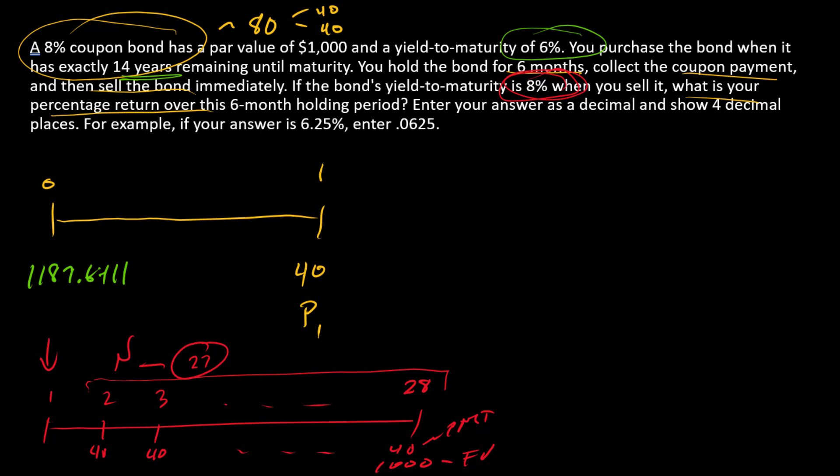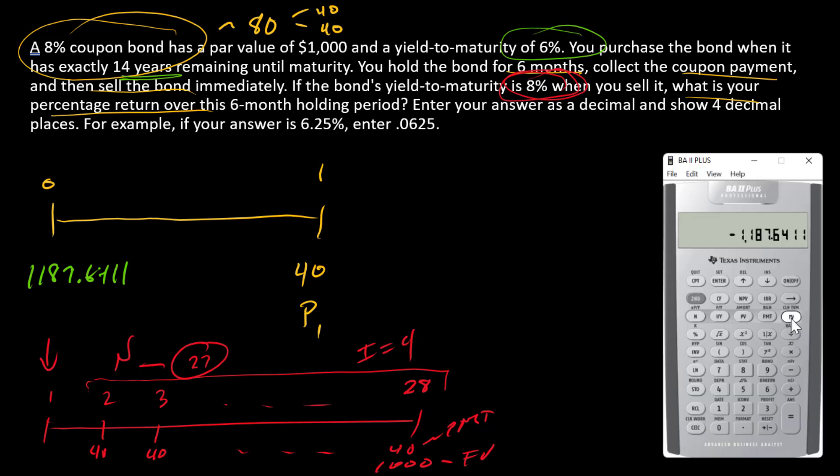This is the discount rate going forward. It's now 8%, so the new I is going to be 4. Let's calculate the new price: $1,000 is FV, $40 is PMT, 27, not 28, 27 is N because there's 27 payments remaining. So 4 goes into I and compute the price. And look at that.